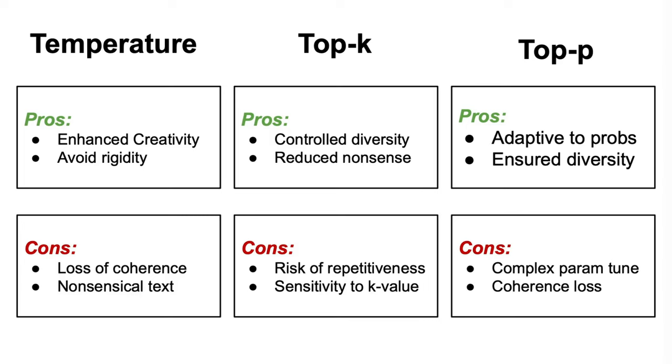However, some of the cons include that setting the appropriate p-value can be challenging and requires experimentation to achieve the desired level of diversity, but also that in some cases, adjusting the set dynamically may lead to a slight loss of coherence in the generated text.